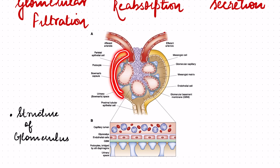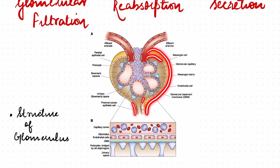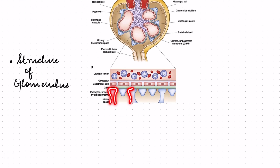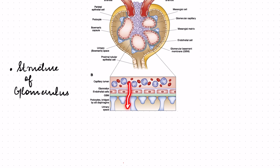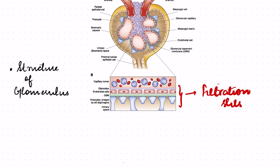This is the Bowman's capsule and this space is the Bowman's space. Another microscopic structure of this glomerulus: these cells which have gaps between them are known as podocytes or foot processes — they have spaces between them. After this layer comes a layer of basement membrane. Then come the endothelial cells of the capillaries, which also have spaces between them, and thus the blood gets filtered through these spaces. These spaces are called filtration slits.